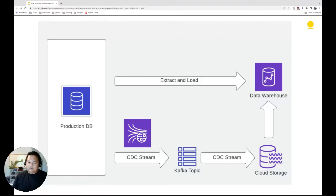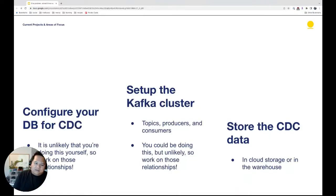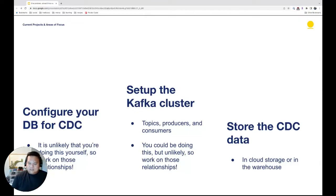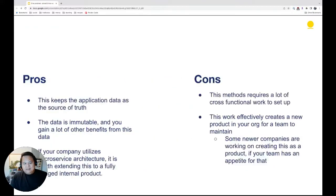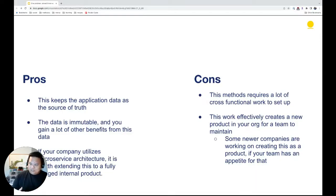At a high level: you do your regular extraction, and on the side you send the CDC stream to your Kafka topic, into cloud storage, and back into your warehouse. The DBA part requires configuring your database for CDC — it doesn't come by default, you have to apply some settings on SQL Server or Postgres. You can set up the Kafka cluster yourself or have your DevOps team do it, depending on team capabilities. You store the data, transform it with that SQL, and then you can analyze it.